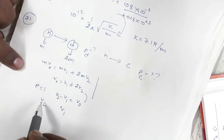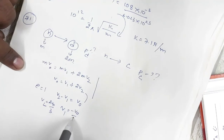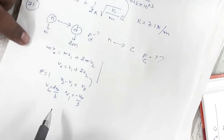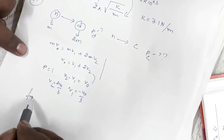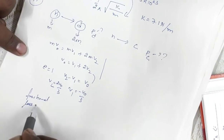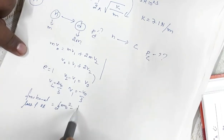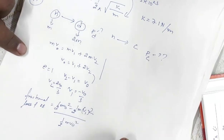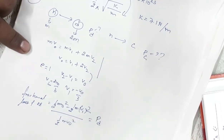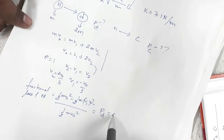Solving the two equations gives v₂ = 2v₀/3 and v₁ = -v₀/3. The fractional loss of kinetic energy is (½mv₀² - ½mv₁²) / (½mv₀²). Substituting v₁ = v₀/3, this value comes out to be approximately 0.89.